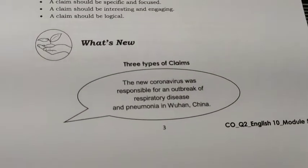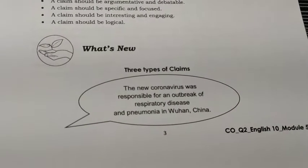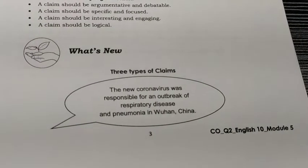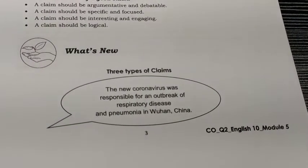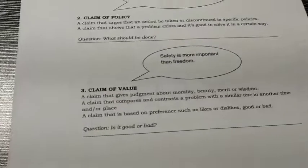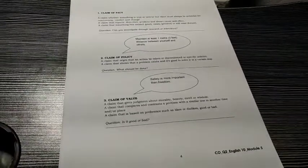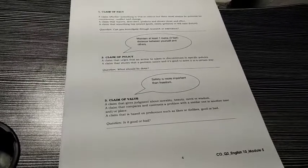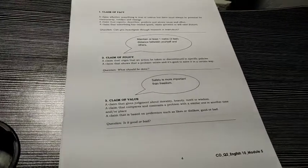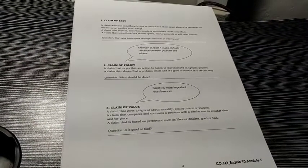For 'What's New,' we have three types of claims that we will differentiate. The new coronavirus was responsible for an outbreak of respiratory disease and pneumonia in Wuhan, China. On page number 4, we have the three claims — fact, policy, and value — which is the competency of this Module number 5. Remember that we already discussed it in Module number 3, so this will be somewhat of a review.